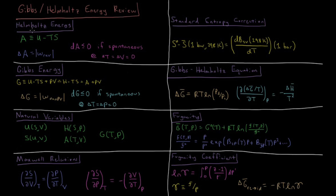We start with the Helmholtz energy, A, which is defined as the internal energy minus temperature times entropy. The change in Helmholtz energy for a given process is equal to the maximum amount of work which can be obtained from the system.